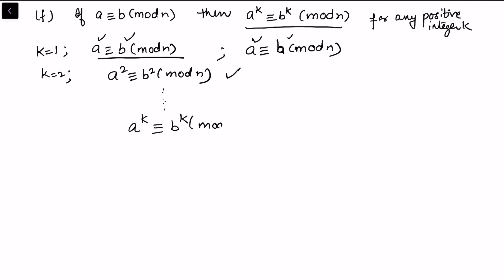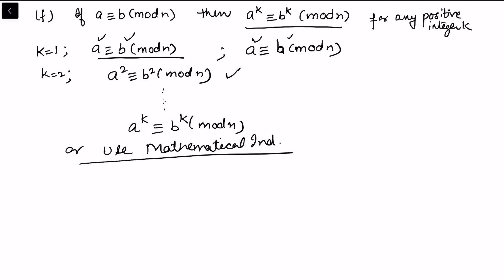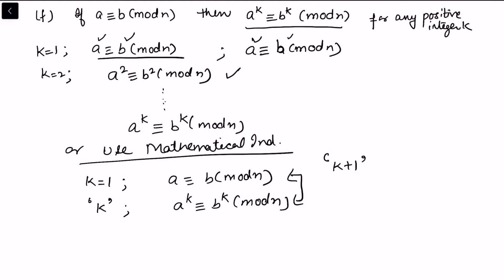We can also use mathematical induction. The base case k equals 1 is true since a is congruent to b modulo n. We assume the result is true for k, meaning a raised to k is congruent to b raised to k modulo n. To get the result for k plus 1, by property four we multiply, giving a raised to (k plus 1) is congruent to b raised to (k plus 1) modulo n. Hence the result is true for all positive integers k.